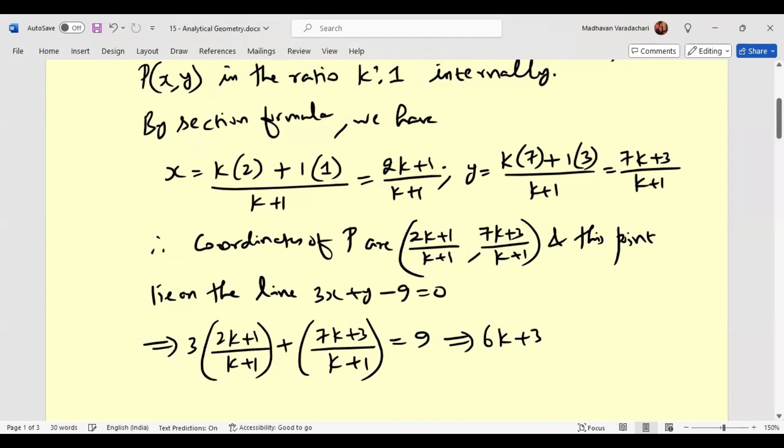You can write it together because there is a common denominator, and that common denominator I will take to the right hand side. So it will become 9 times (k plus 1). This gives us 13k plus 6 equal to 9k plus 9.